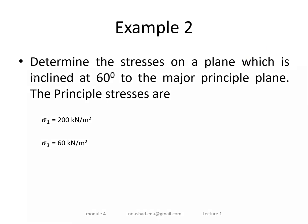Second example: Determine the stress on a plane inclined at 60 degrees to the major principal plane, given that sigma_1 = 200 kN/m² and sigma_3 = 60 kN/m².